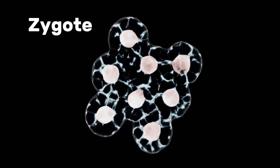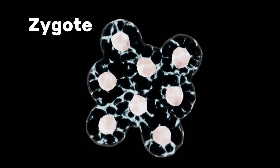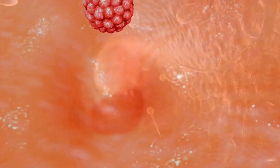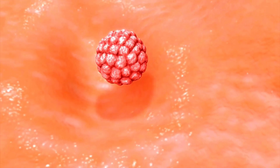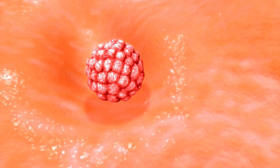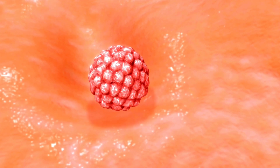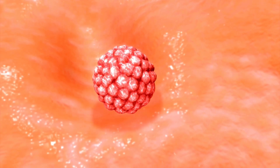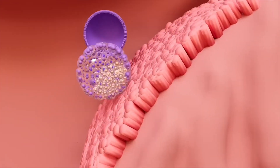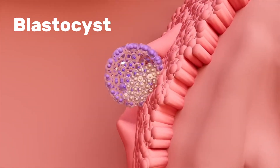The zygote starts dividing into multiple cells and travels down the fallopian tube. By the time it reaches the uterus, it has developed into a ball of cells known as a blastocyst.